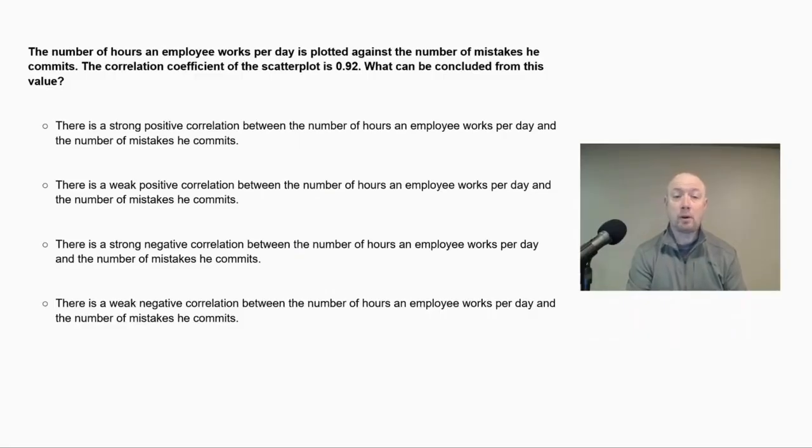The number of hours an employee works per day is plotted against the number of mistakes he commits. The correlation coefficient of the scatter plot is 0.92. What can be concluded from this value? Alright, so when we look at correlation coefficient, what we're looking for is, is it positive or negative? So in this case here, 0.92 is positive, so that means that we can eliminate any of the choices that talk about negative correlations.